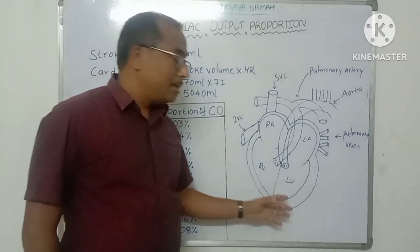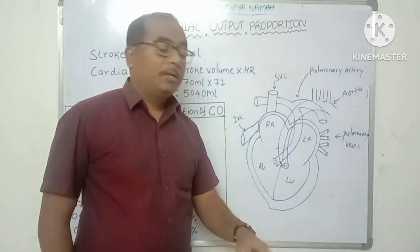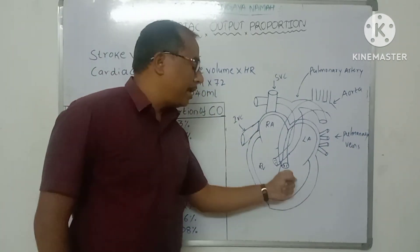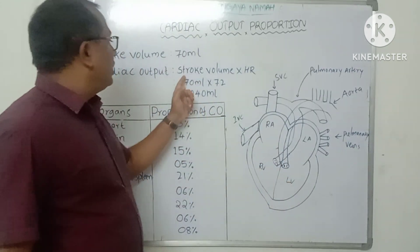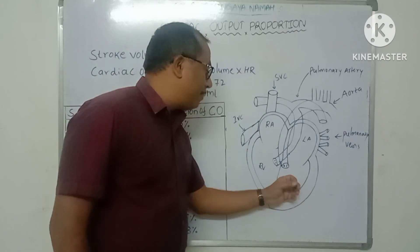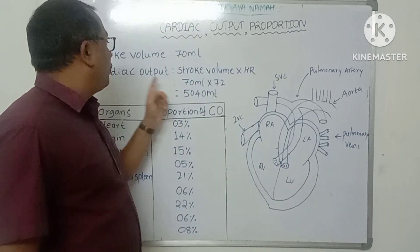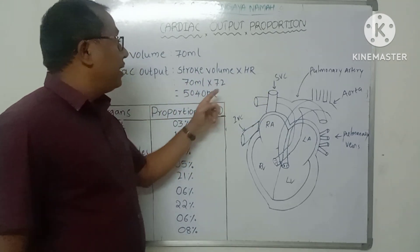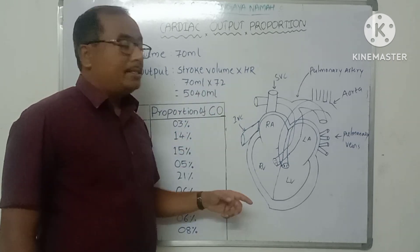Cardiac output is the amount of blood ejected from the left ventricle in one minute. In one minute, 72 contractions happen — that is the heart rate. So cardiac output equals stroke volume multiplied by heart rate: 70 ml times 72 equals 5040 ml of blood ejected to the peripheral tissue per minute.